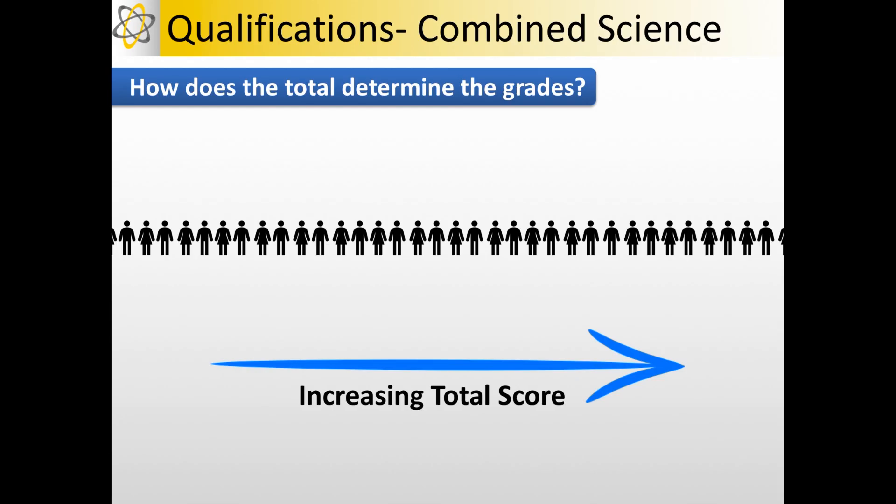The way that they do that is that they rank the country in order of the total score across the six papers that they achieved. They then compare those scores to previous years and the performance of those candidates to previous years. They work out how many marks would be required for each of the grade boundaries.